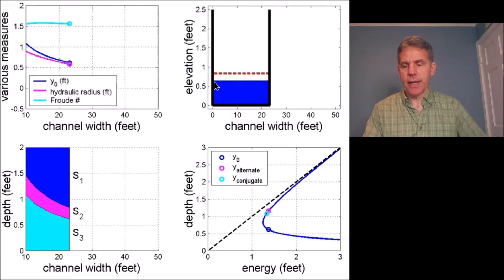You can see that the channel is actually wider so the discharge per unit width, since discharge is actually constant, the discharge per width is going to get smaller as the channel gets wider.